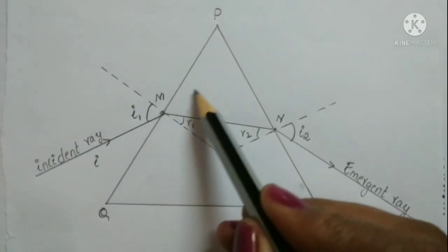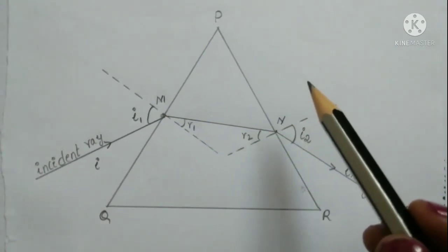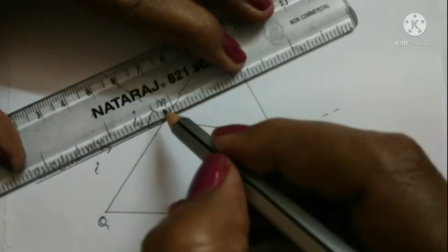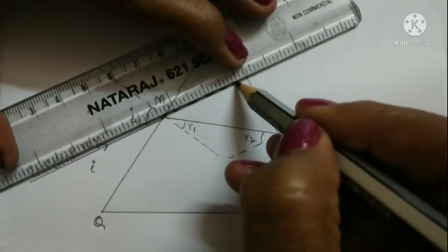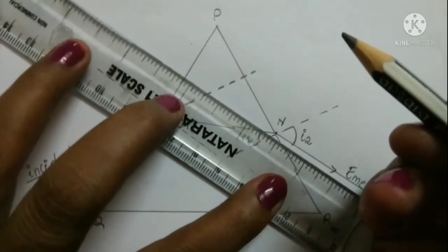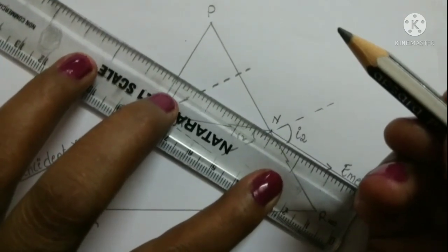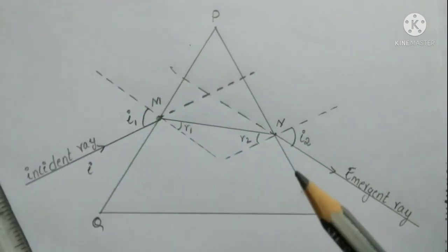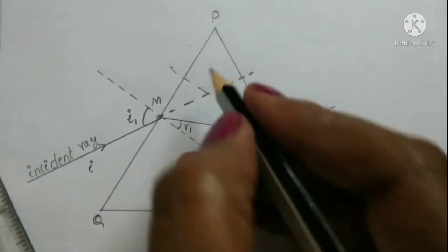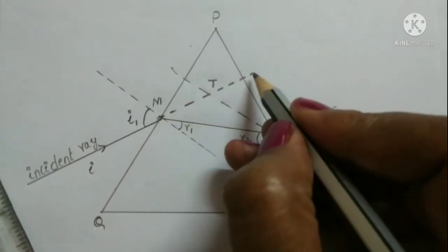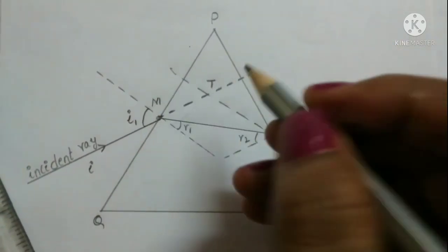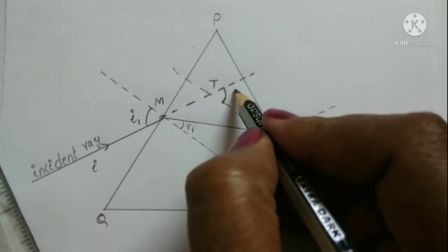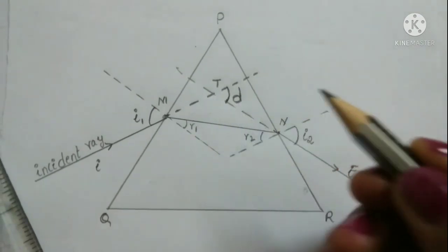Now I will extend the incident ray and the emergent ray so that these two extended rays meet at a point — let this point be T. The angle between this extended incident ray and the extended emergent ray is called the angle of deviation, represented by the letter D.